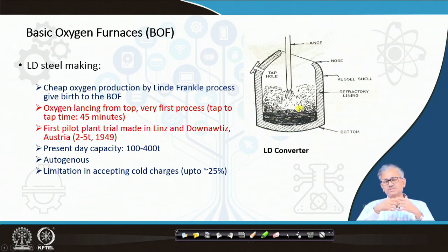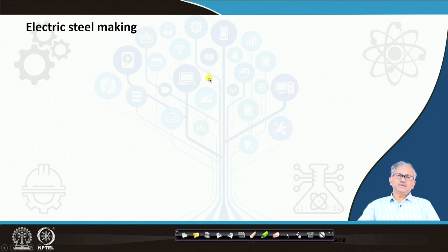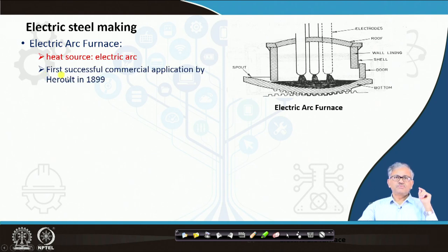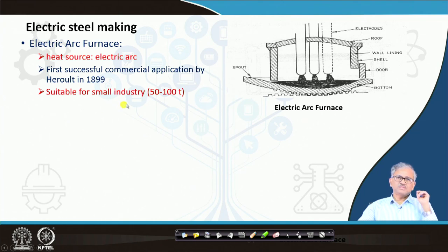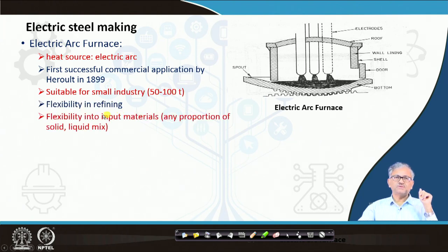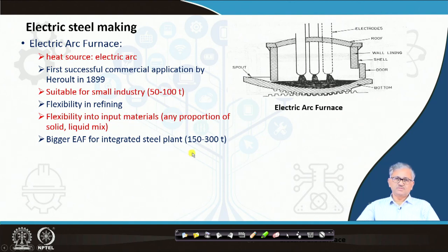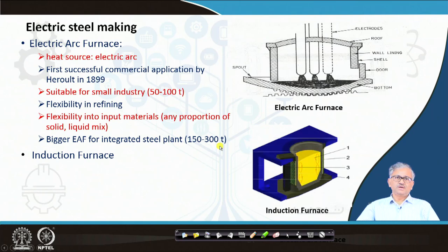The LD furnace is also an autogenous process — not only autogenous — because since the partial pressure of oxygen is very high, heat generation is also quite high, so you can accept some amount of cold charge also. Then came the electric arc furnace — there are two types of electric steel making. One is based on the electric arc, where the heat source is the electric arc. The first successful commercial application was by Héroult in 1899. It is suitable for smaller industry — 50 to 100 tons — and you can melt the scrap and produce any kind of alloy steel because there is a lot of flexibility in refining.